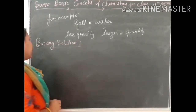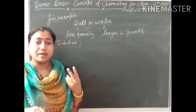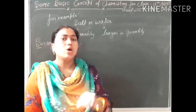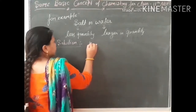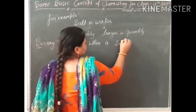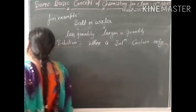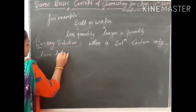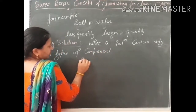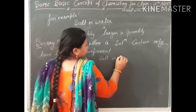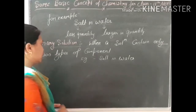Binary solution — 'bi' means 2. When a solution contains only two types of components, such as salt in water or sugar in water, where only two components are present, we call it a binary solution.